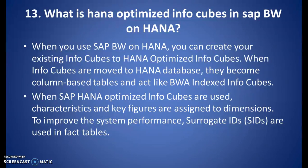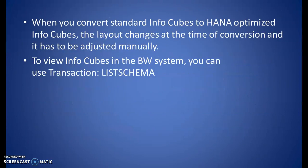When SAP HANA optimized InfoCubes are used, characteristics and key figures are assigned to dimensions. And to improve system performance, surrogate IDs are used in fact tables. When you convert standard InfoCubes to HANA optimized InfoCubes, the layout changes at the time of conversion and it has to be adjusted manually.